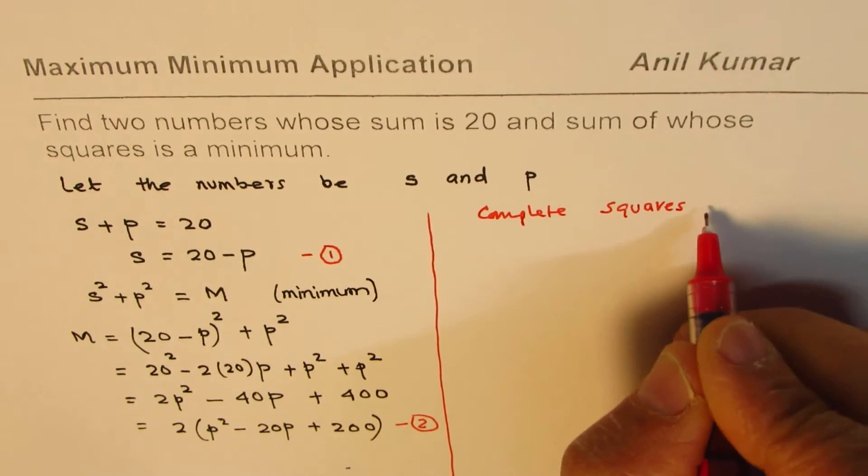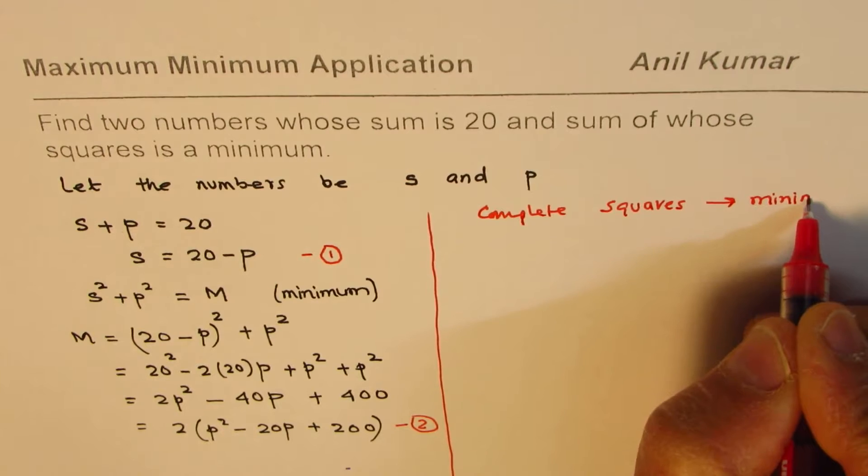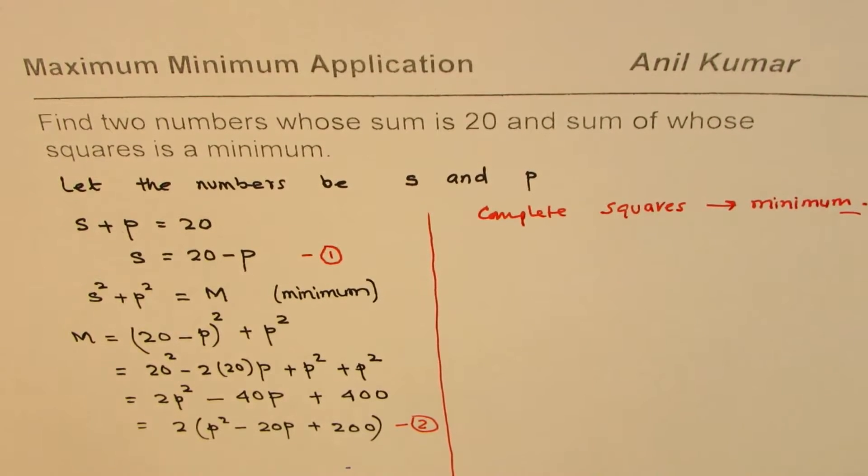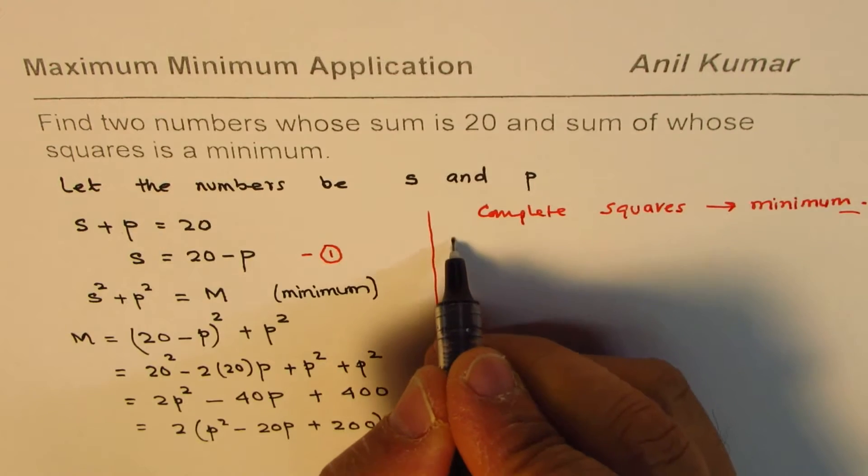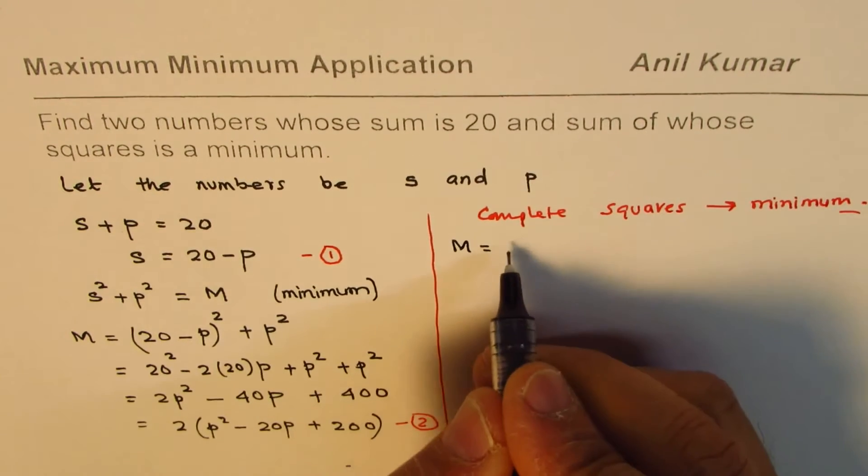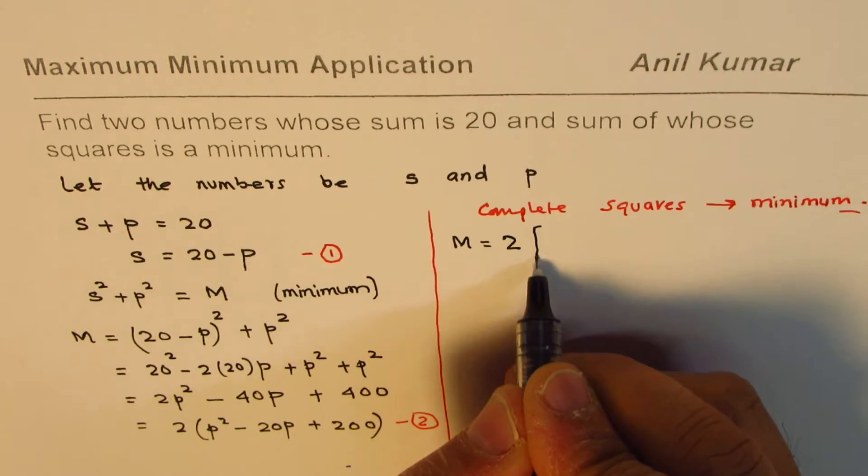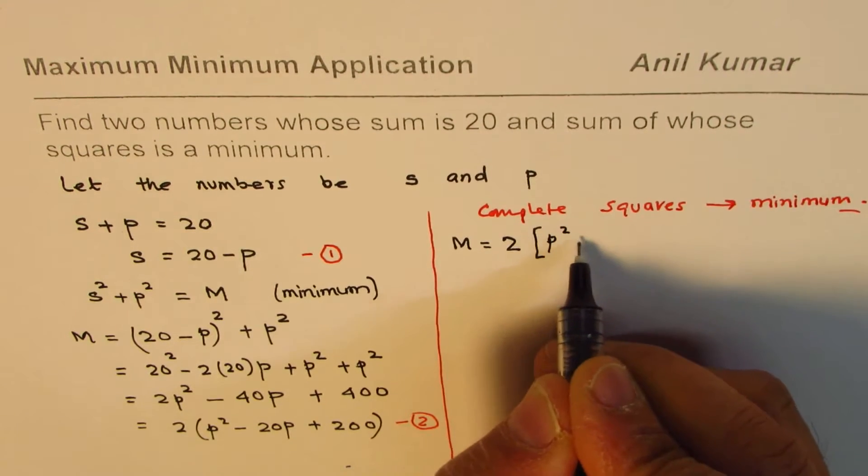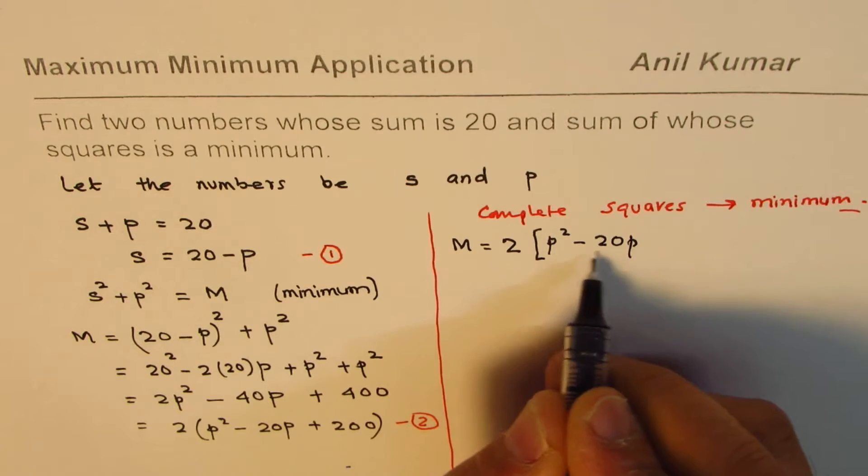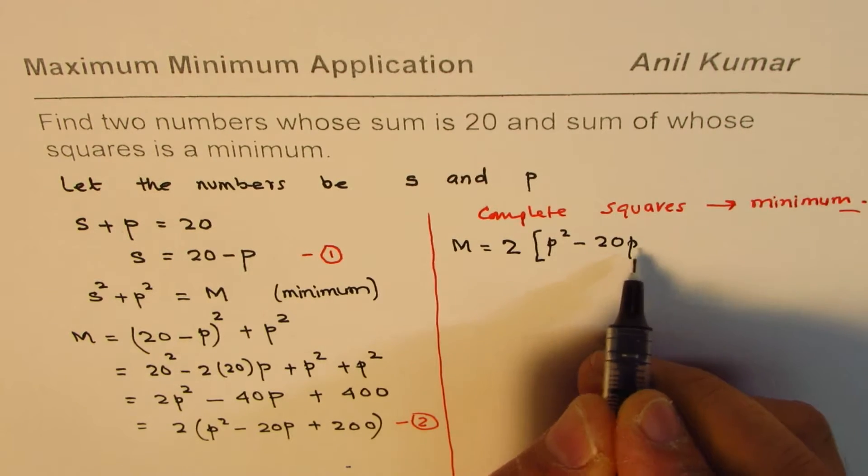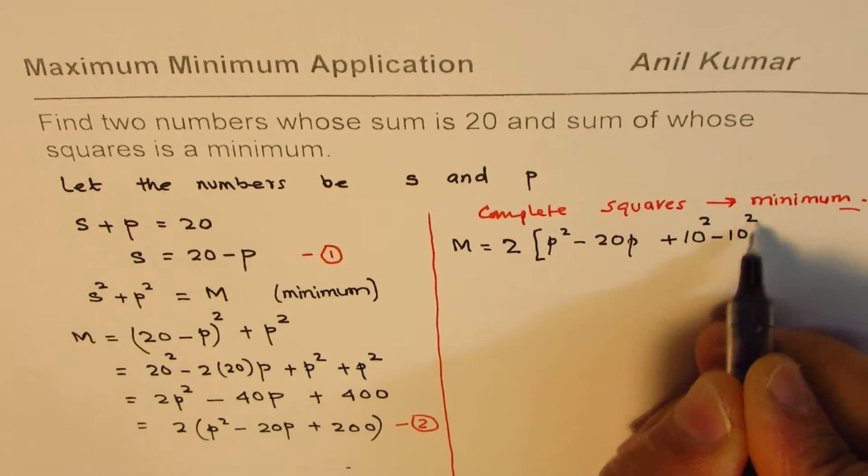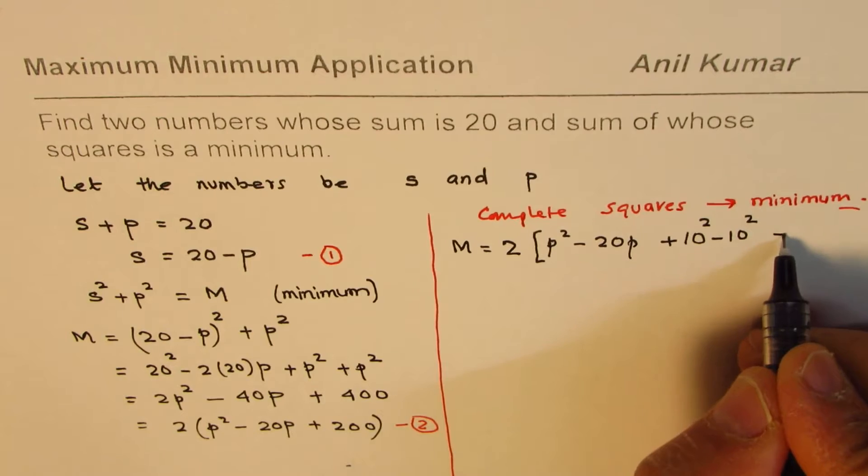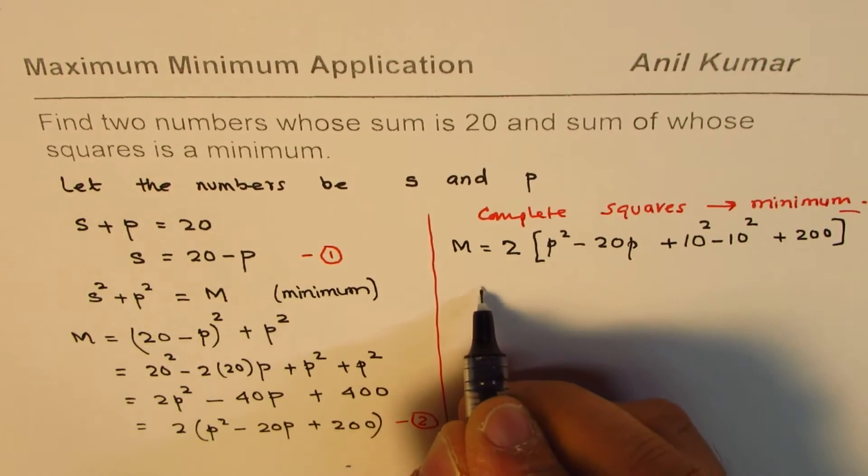For completing squares, minimum M equals 2 times, let me put square brackets: p² minus 20p. We'll do half of this to make a perfect square and square it. Half of 20 is 10, so we'll add and subtract 10² plus 200.